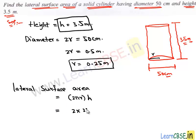Let's substitute their values. We have the value of π which is 22/7, and radius is 0.25 meters, and height is 3.5 meters.